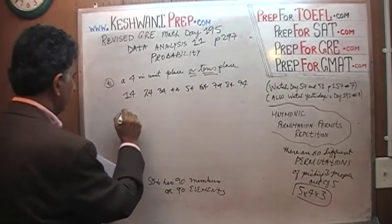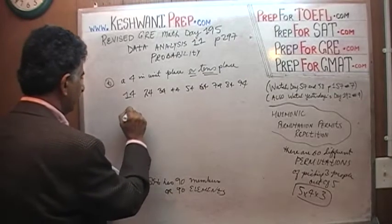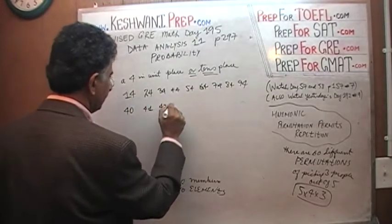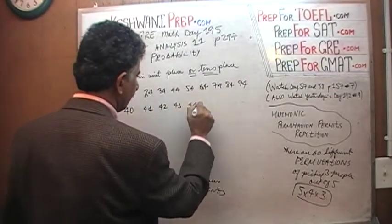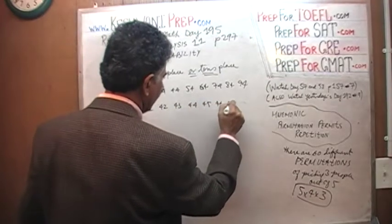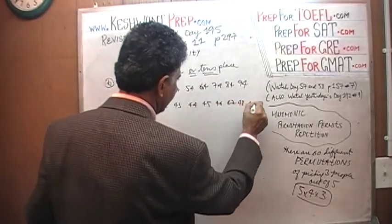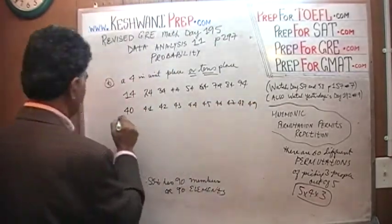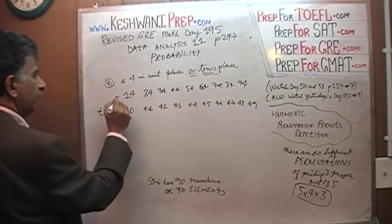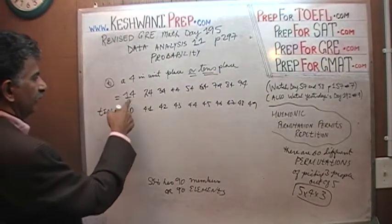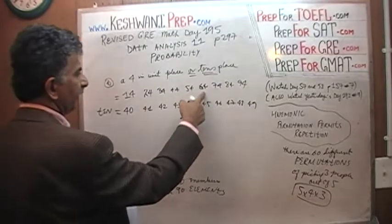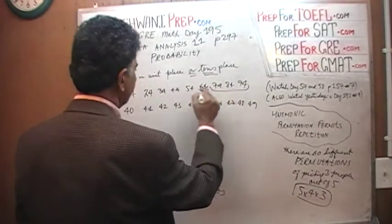And how many of them have four in the tens place? Four in the tens place is simply: forty, forty-one, forty-two, forty-three, forty-four, forty-five, forty-six, forty-seven, forty-eight, and forty-nine. There are ten of these. And there are nine of those with four in the unit place.